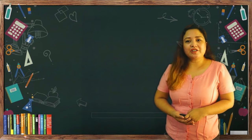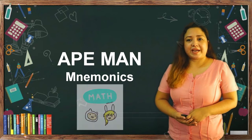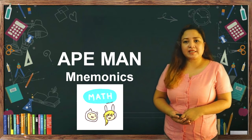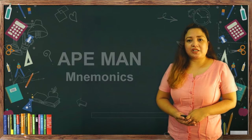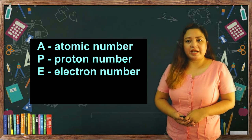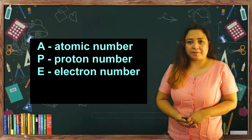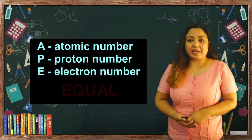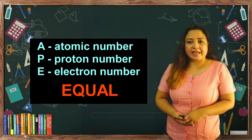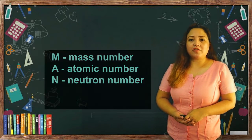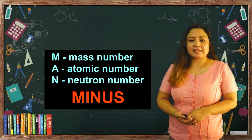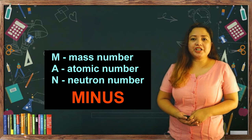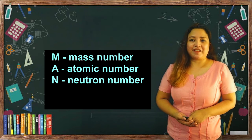You are going to use the APEN mnemonics. In APEN mnemonics: A means atomic number, P means proton number, and E means electron number — these three numbers must always be equal. For N, you are going to subtract the mass number minus the atomic number in order to get your neutron number.